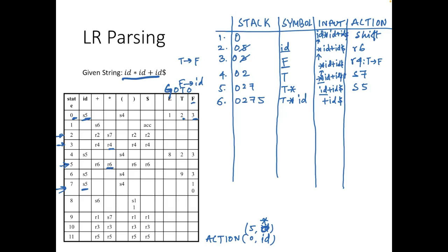Now the top of the stack is 5 and current input is +. We look up action[5, +] — it is r6, reduce by rule 6, which is F → id. So id in the symbols is reduced to F. State 5 is popped; the new top of the stack is 7. We look up goto[7, F] — it gives 10, so 10 is pushed onto the stack.